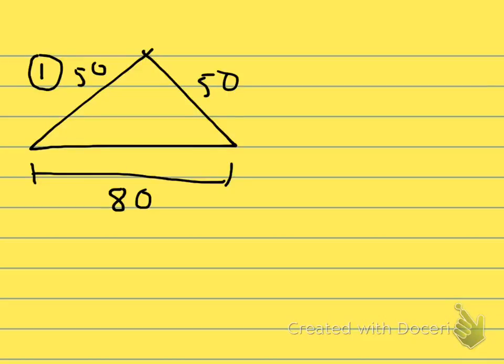Problem 1 on the area volume test asks to find the area of an isosceles triangle with sides 50, 50, and 80, like the one I've drawn here.